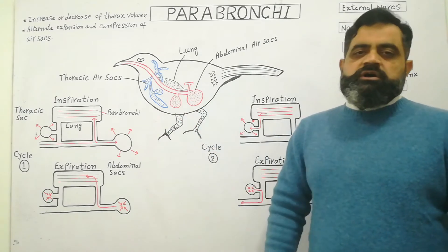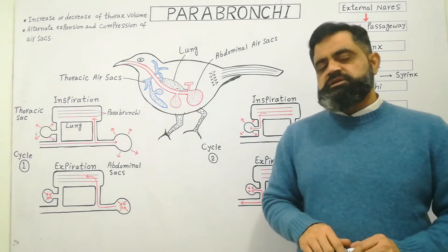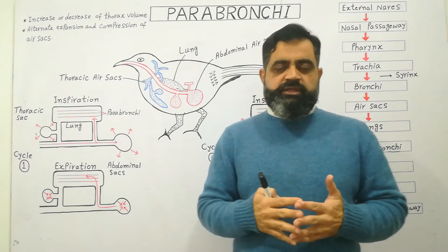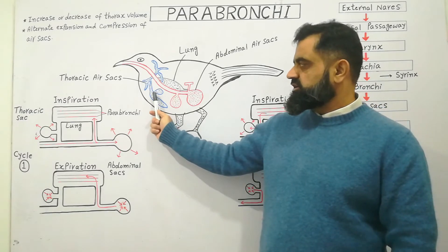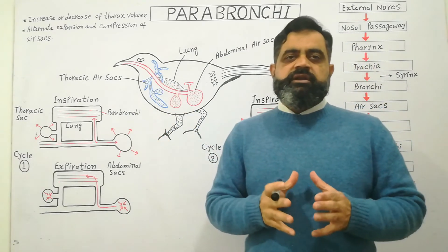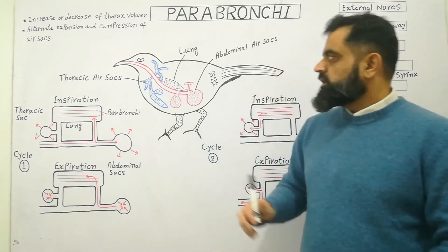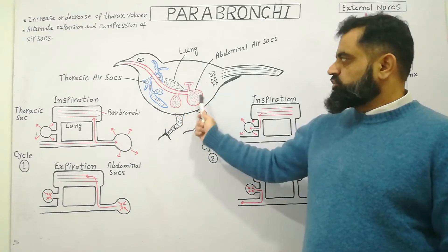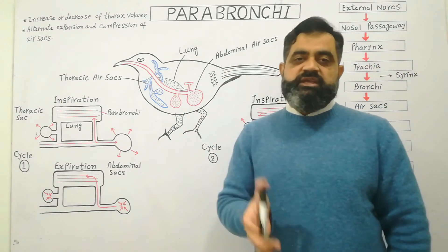Associated with the lungs of the bird there are nine air sacs. There are two cavities in the body of the bird: the thoracic cavity on the anterior side and the abdominal cavity below it. The air sacs present in the thoracic cavity are known as thoracic air sacs, as you can see in the blue diagram. These air sacs penetrate the thoracic region and sometimes deep near the bones. The abdominal cavity also contains air sacs associated with the lungs, known as abdominal air sacs.